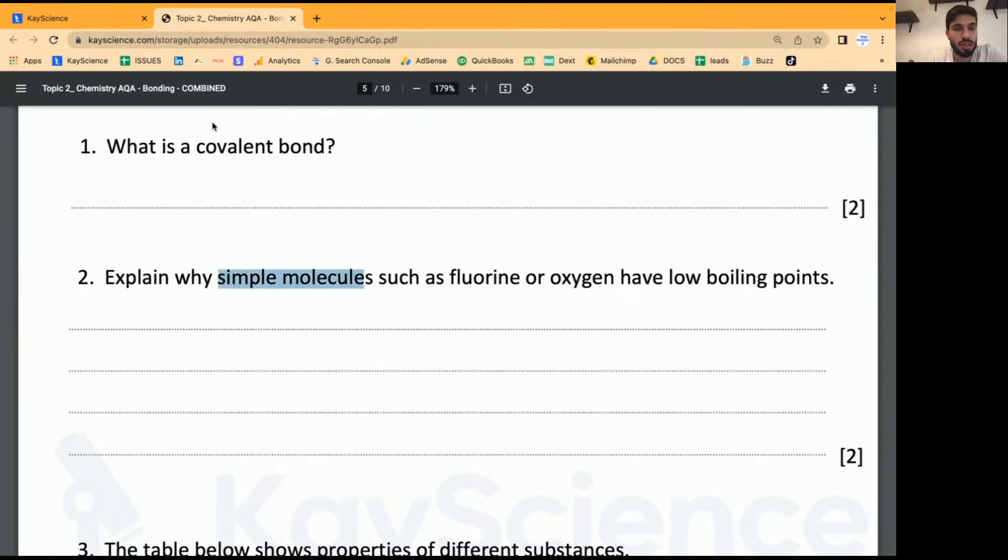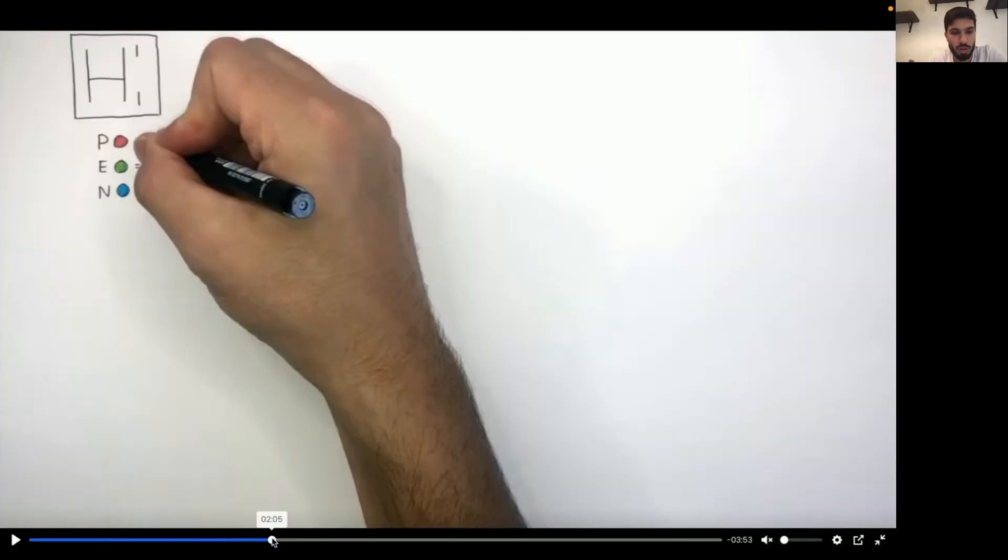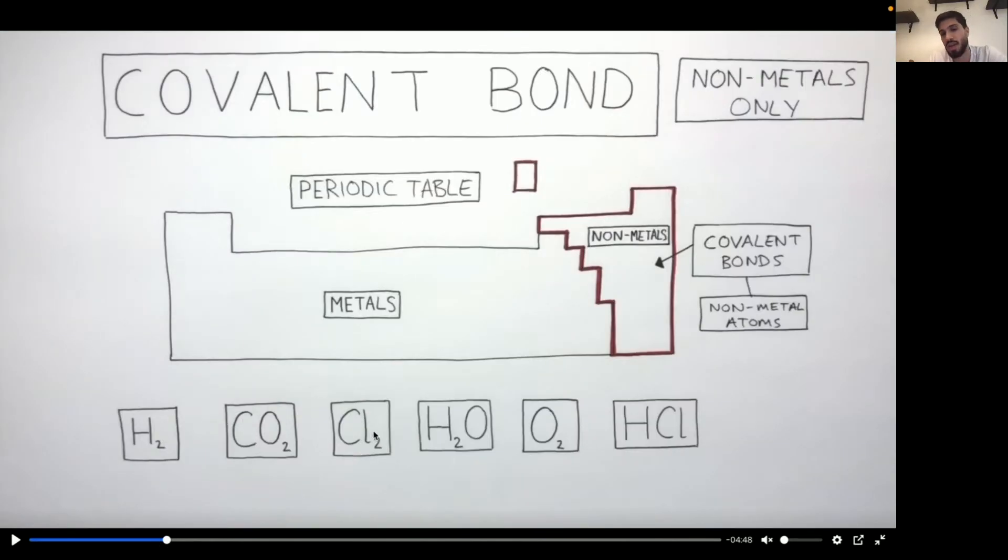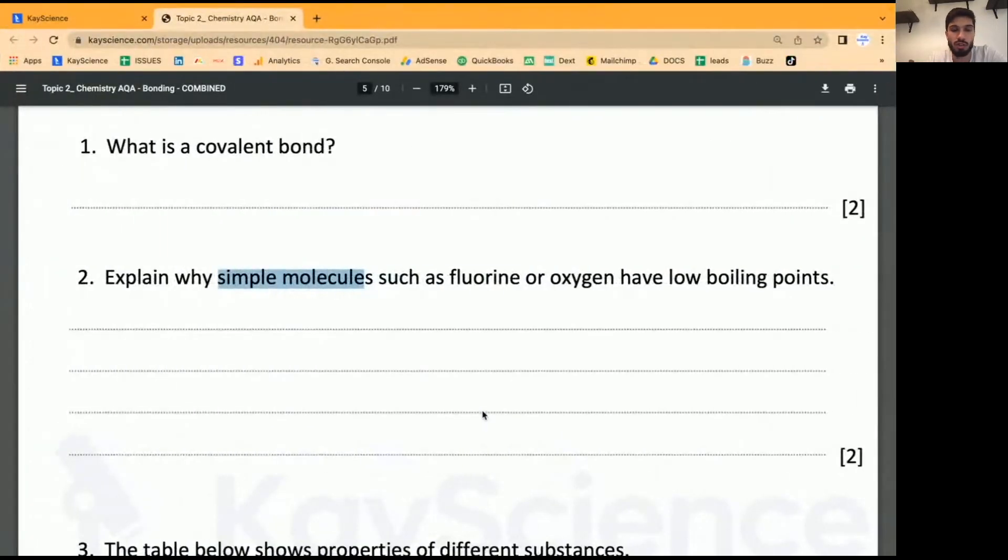Simple molecules such as these molecules here that we've already learnt about - hydrogen gas, carbon dioxide gas, chlorine gas, water, oxygen gas, hydrogen chloride - these are all simple molecules. Now, although they have strong covalent bonds between the atoms, they actually have low melting points, which is why they are either gases or liquids at room temperature. So why is it, explain, why do these simple molecules such as fluorine or oxygen have low boiling points?